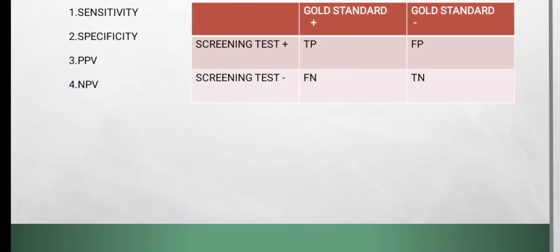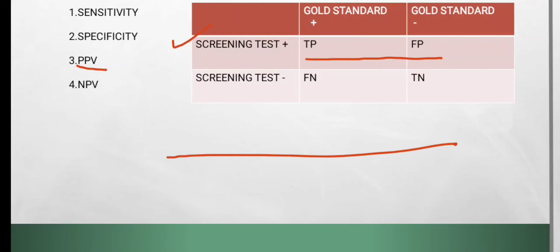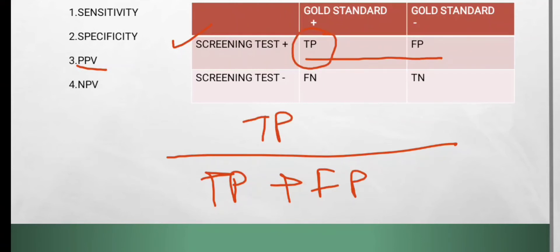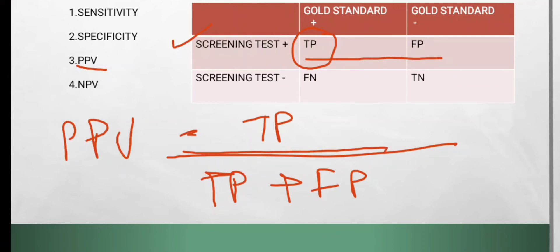Now let's talk about positive predictive value and negative predictive value. Positive predictive value is the ability of the screening test to correctly identify all those who have the disease out of those who tested positive on the screening test. All those who tested positive were true positive plus false positive, but in reality only the true positive had the disease. So positive predictive value equals true positive divided by true positive plus false positive. A quick mnemonic: all the P's stay together.